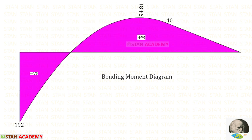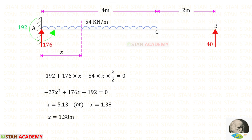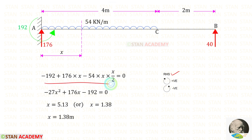Here you can see the bending moment diagram. At one point, the bending moment becomes 0 — this is the point of contraflexure. Let us make a section at that point at a distance x from point A, and using the right-hand side rule, set the moment equal to 0 to find x. There are two values, but one is not applicable, so x equals 1.38 meters.